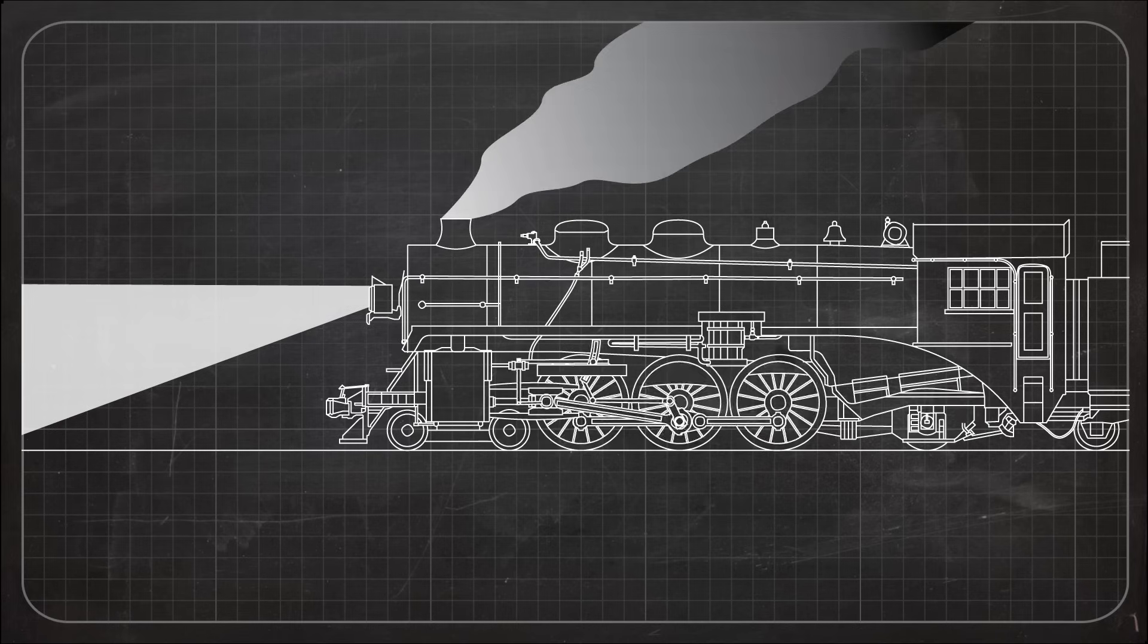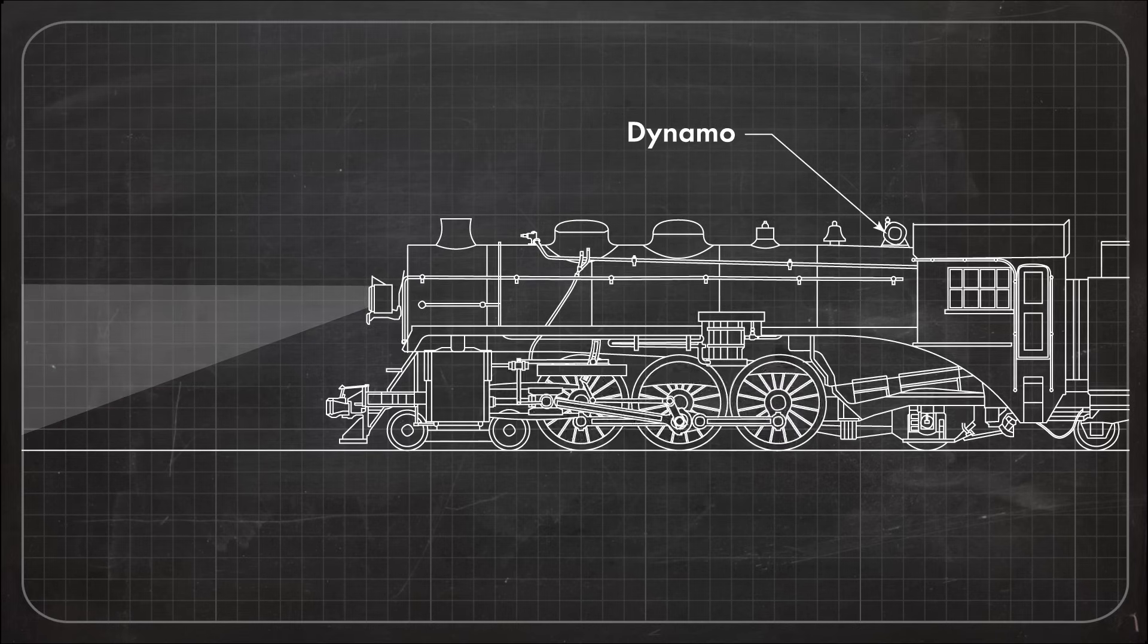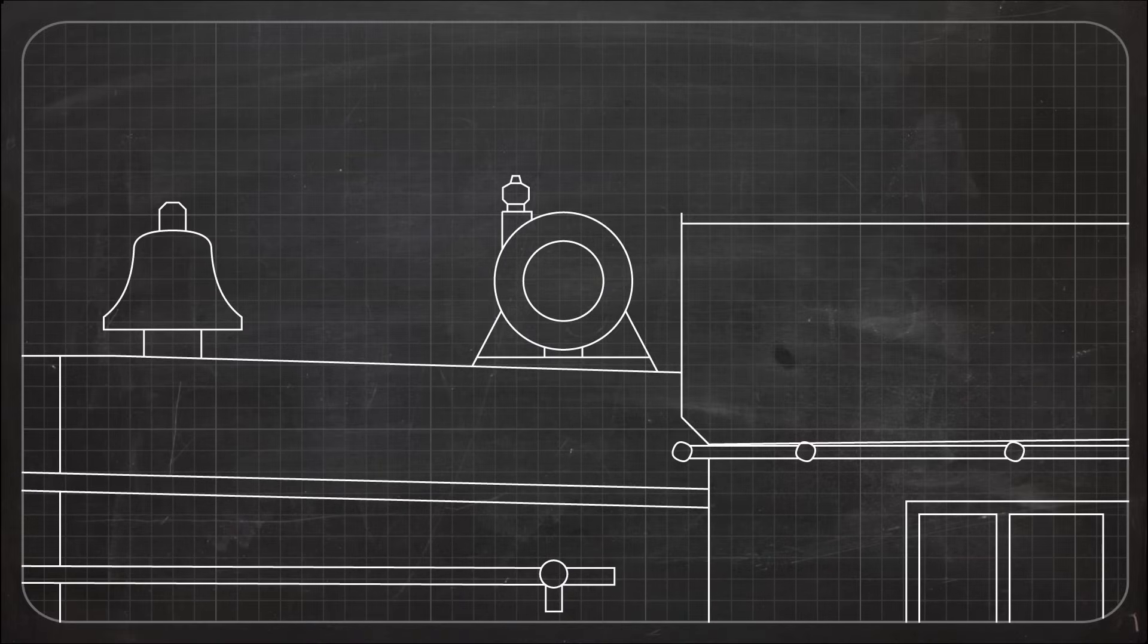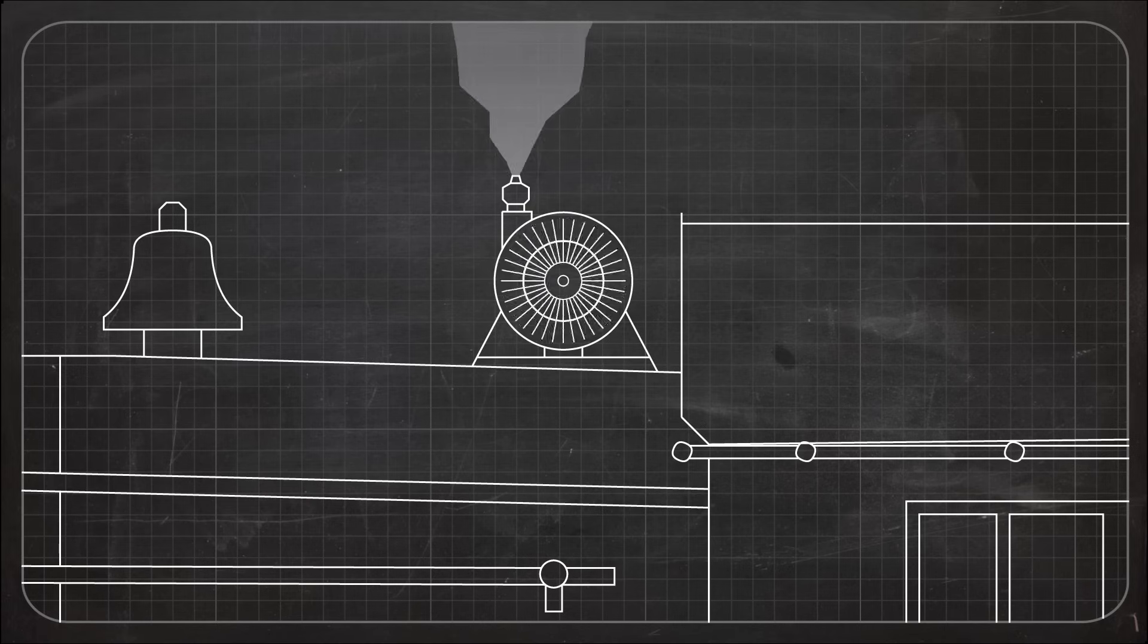This is done by using a turbo generator or dynamo, which sits on top of the boiler. This device converts the kinetic energy of high pressure steam into electrical power. What may appear to be steam leaking from the top of the boiler is actually the generator at work, releasing used steam after it powers the turbine.